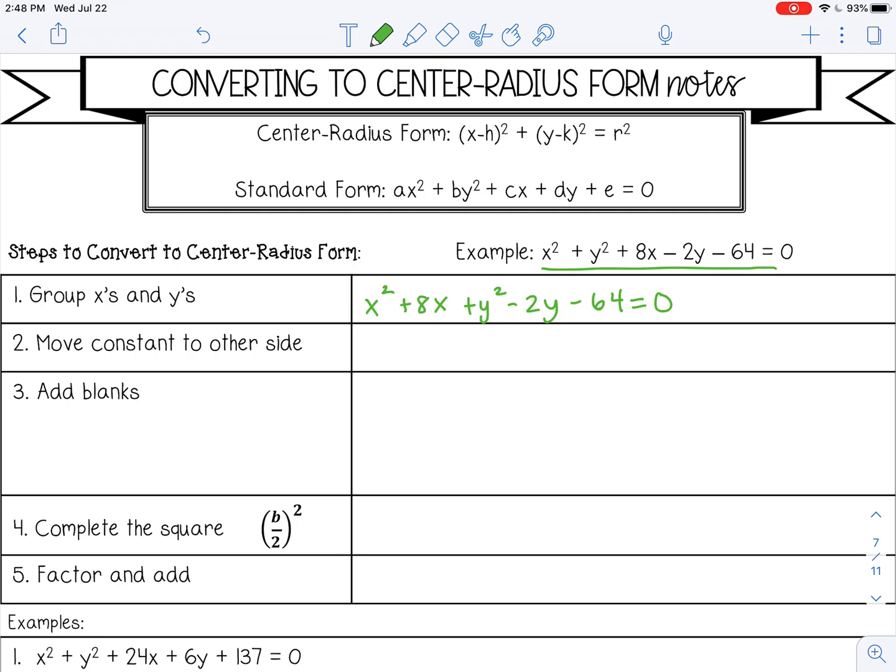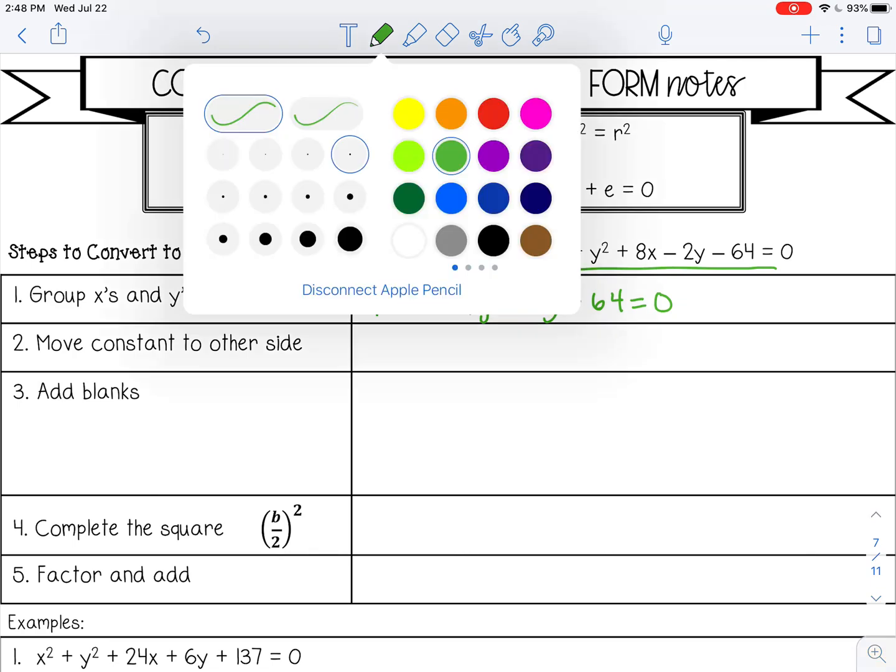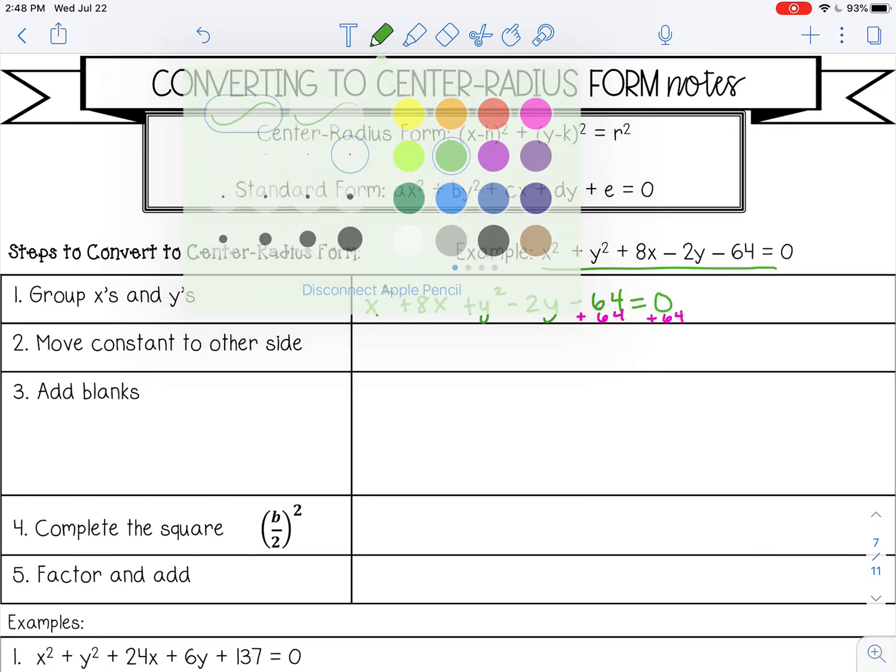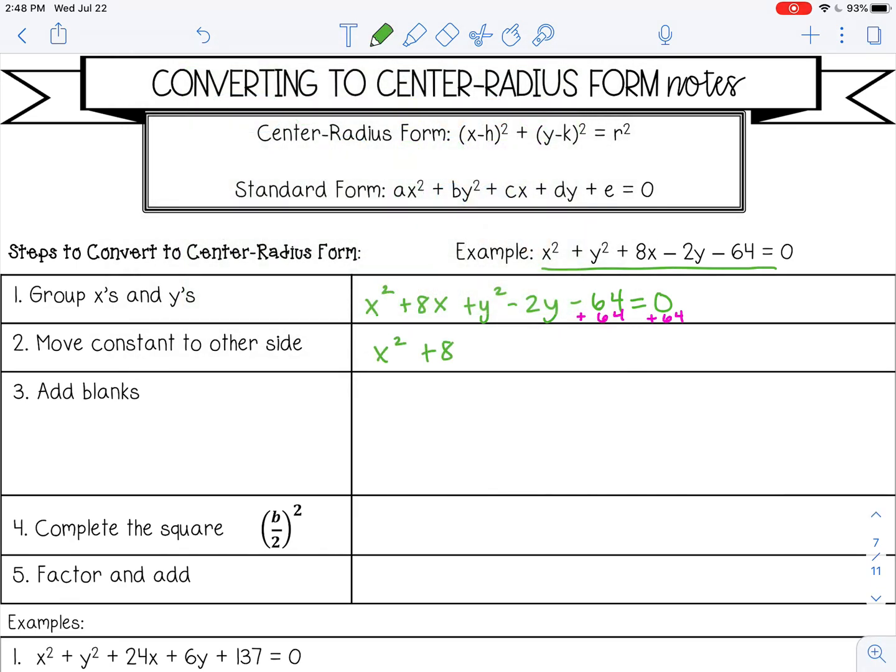Next I'm going to move the constant to the other side of the equal sign. I can do that by adding 64 to both sides. So x squared plus 8x plus y squared minus 2y equals positive 64.